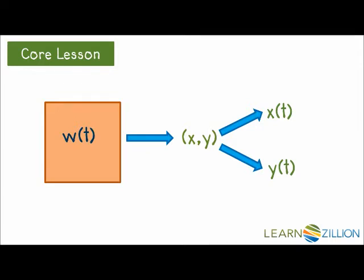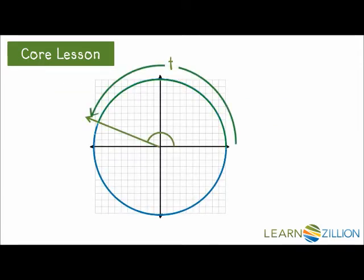We take the real number t and measure an arc around the unit circle. Because we're using the unit circle, both the arc length and the angle equal t. The wrapping function takes us to the point x, y, which we will rename x of t, y of t. These are our two new functions.